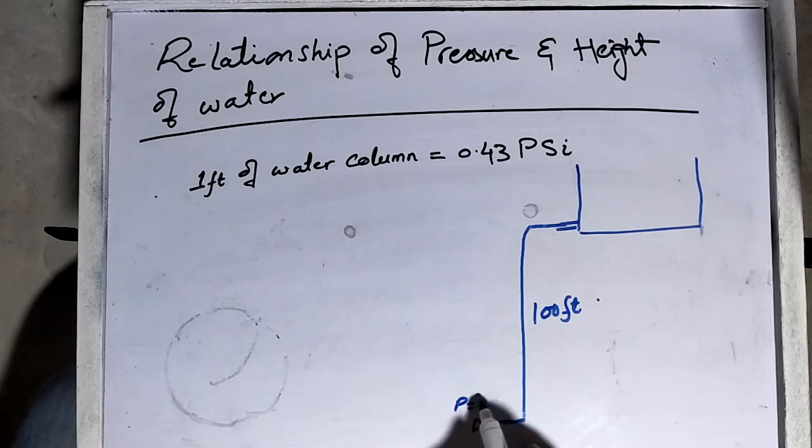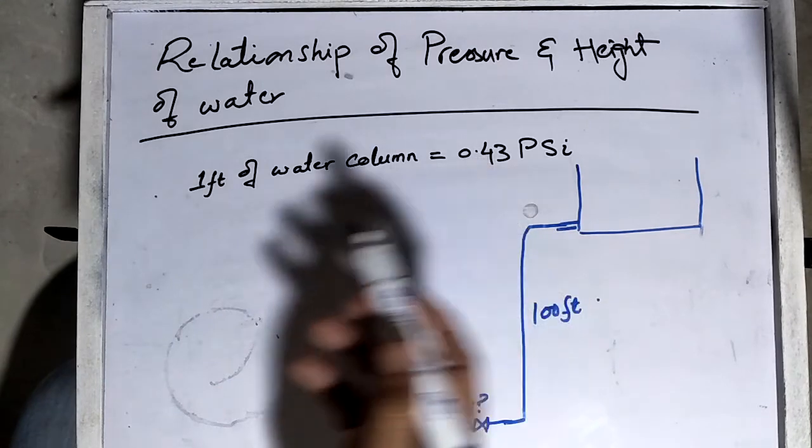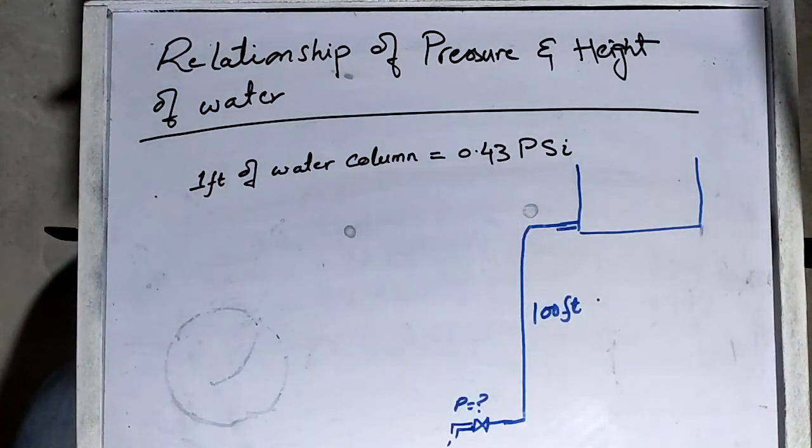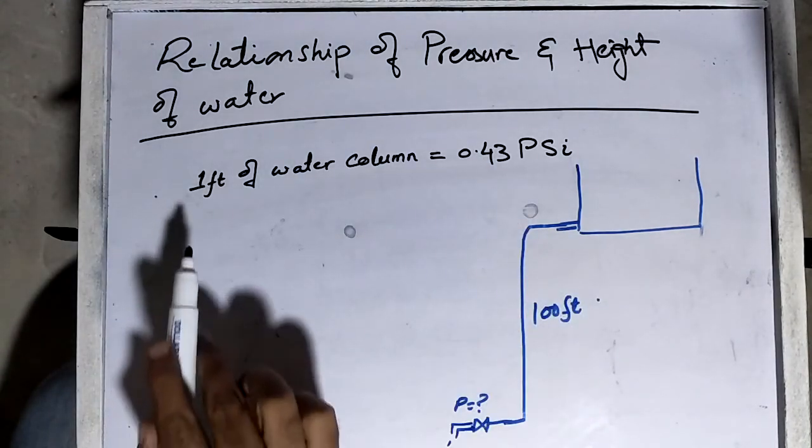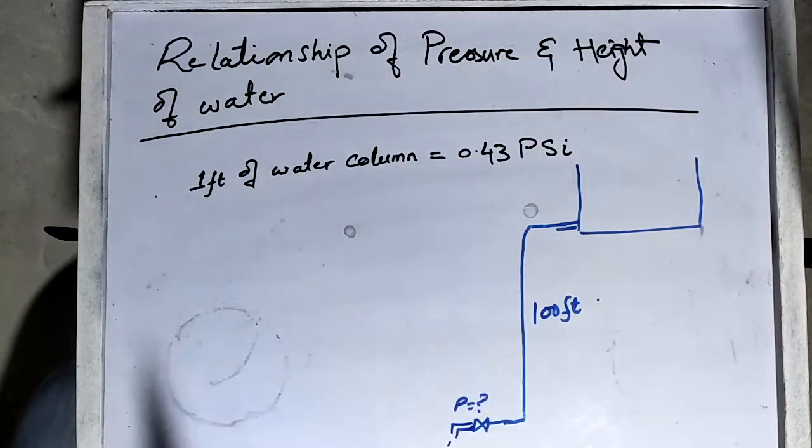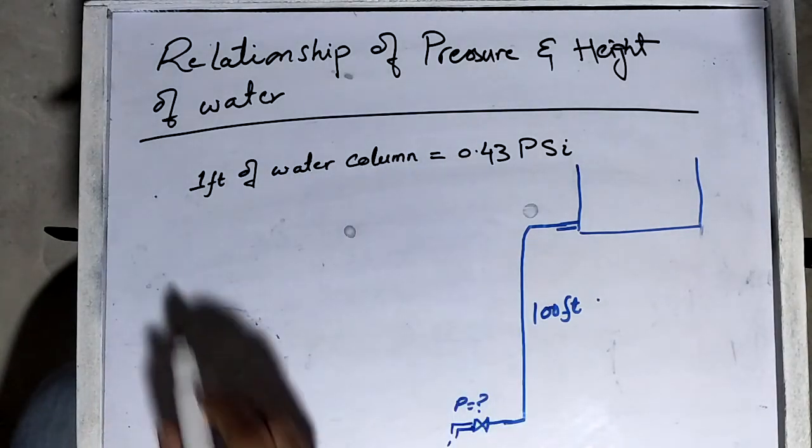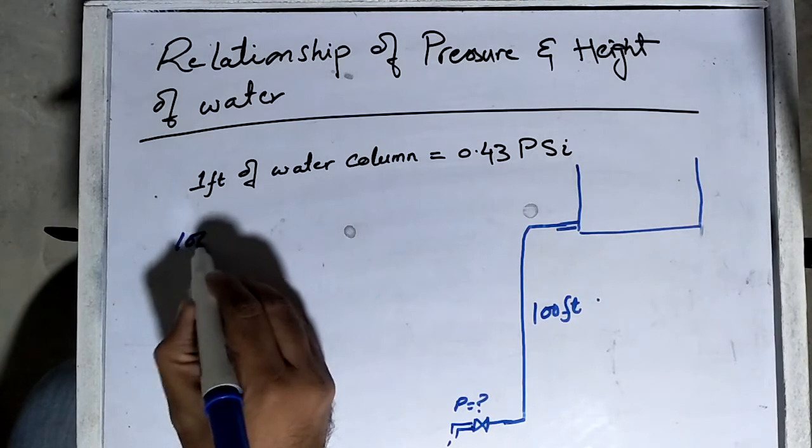By memorizing this constant factor, we can easily calculate. One foot of water column will exert 0.43 PSI pressure, so the 100 feet of water column...